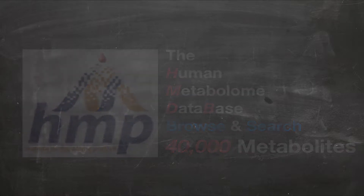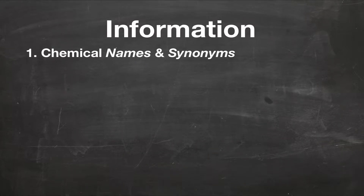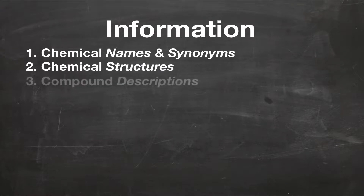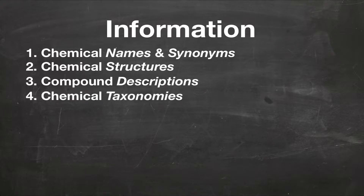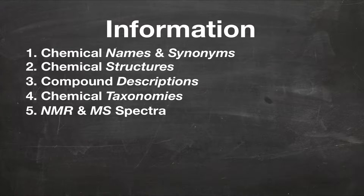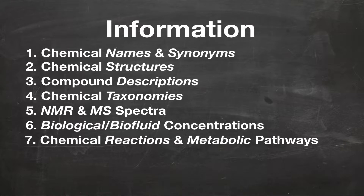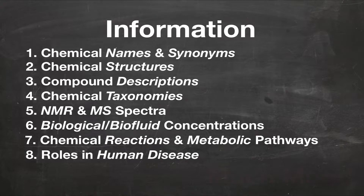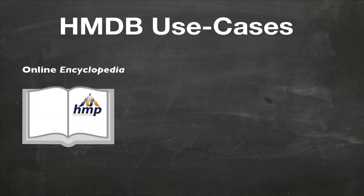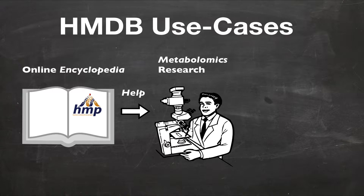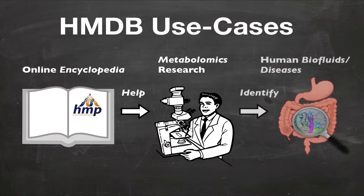The information in HMDB includes chemical names and synonyms, chemical structures, compound descriptions, chemical taxonomies, NMR and MS spectra, biological or biofluid concentrations, known chemical reactions, and metabolic pathways, their roles in human disease, and much more. The HMDB is more like an online encyclopedia than a database. It is really intended to help scientists perform advanced metabolic research and is often used by researchers to identify chemicals in human biofluids through its spectral searches, and to interpret their biological roles in human health and disease.